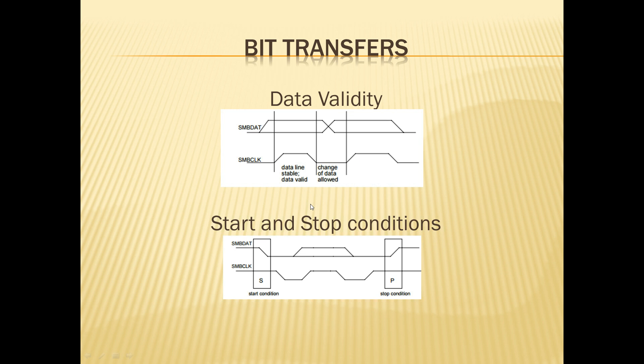The start and stop conditions for transfer. Whenever the SMBus clock is high and the data line takes a transition from high to low, it indicates the start of communication between the devices. Whenever the SMBus clock is high and the data transfer takes place from low to high, it indicates a stop condition as shown in the figure.